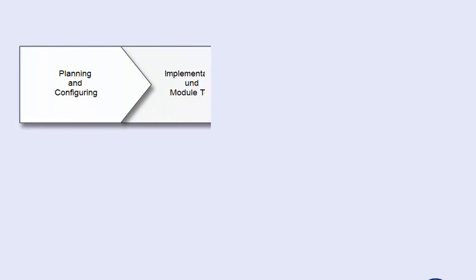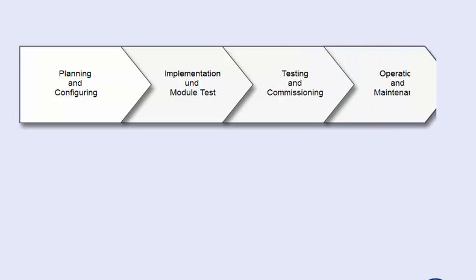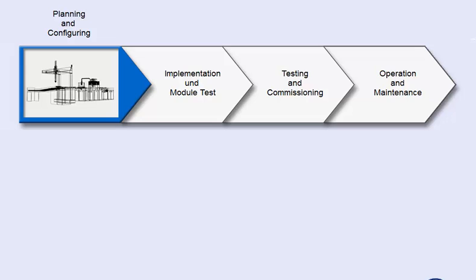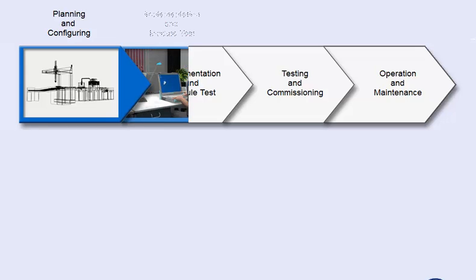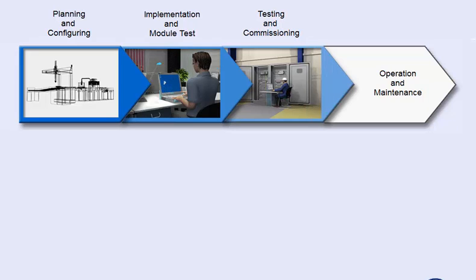An engineering project from the generation to the operation of a plant or machine is generally composed of the following four main phases: planning and configuring, implementation and module test, testing and commissioning, and operation and maintenance.